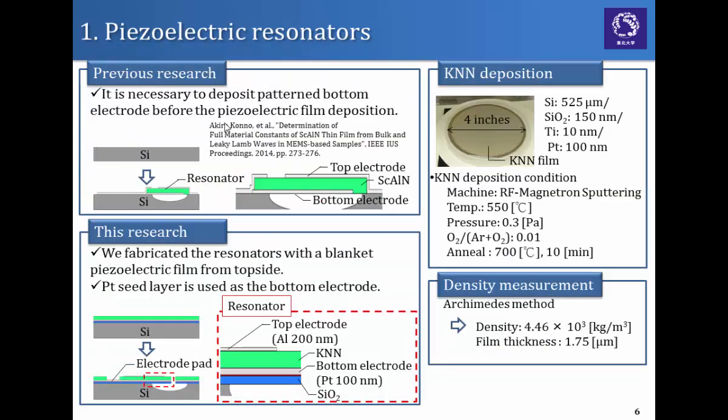Next, I will talk about the piezoelectric resonators which we fabricated. On our previous research, we had to deposit the bottom electrodes before we deposit the piezoelectric film. But we cannot use this way because our target is a blanket KNN film which is already deposited on a whole wafer. So we developed in this research a new method. We fabricated the KNN resonators with blanket film from top side and we also use the platinum seed layer as a bottom electrode.